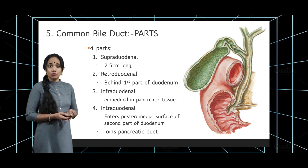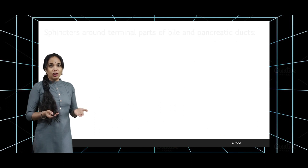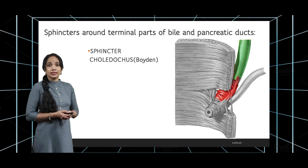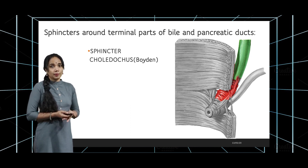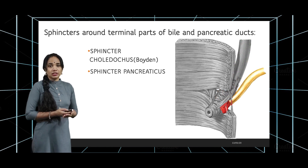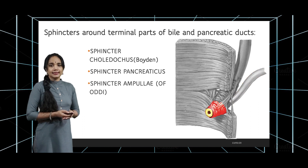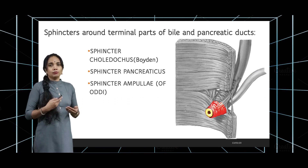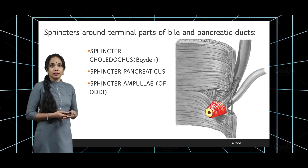Now, what is the sphincter system of the common bile duct? There are three sphincters. The first is the sphincter choledochus, seen around the common bile duct — 'chol' meaning bile, 'dochus' meaning duct — also called the sphincter of Boyden. The second is the sphincter pancreaticus, around the pancreatic duct. The third is the sphincter ampullae of Oddi, or sphincter of Oddi, which projects into the second part of the duodenum and forms the major duodenal papilla. These three are the main sphincters to remember.